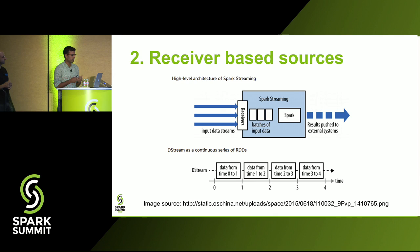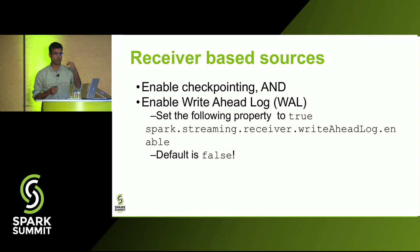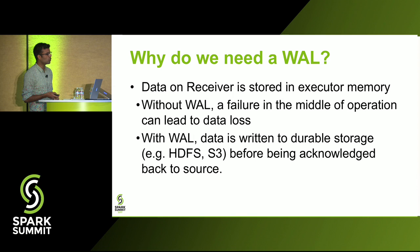The second source category is receiver-based sources. A separate receiver process reads data from an input stream, Spark Streaming processes it, and results go to a storage system. For receiver-based sources to prevent data loss, you have to do two things: enable checkpointing, and enable a write-ahead log using specific properties. By default, the write-ahead log is disabled.